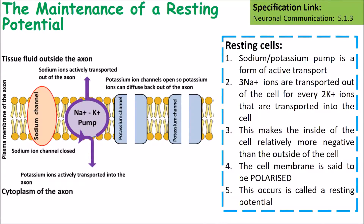The resting potential of a nerve cell membrane is minus 70 millivolts. This needs to be maintained in order for a generator potential or an action potential to be passed along it. There are a few key areas which we need to look at. To maintain it we need to look at sodium channels and the sodium-potassium pump. There is tissue fluid outside of the axon which requires sodium ions to be actively transported out, and potassium ions to be actively transported into the axon.